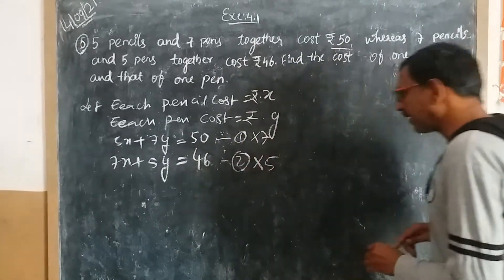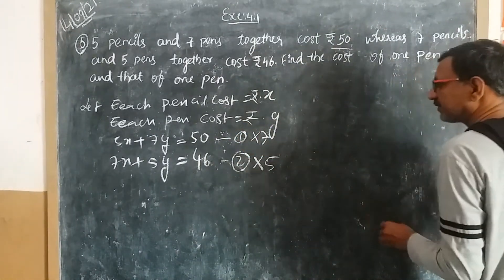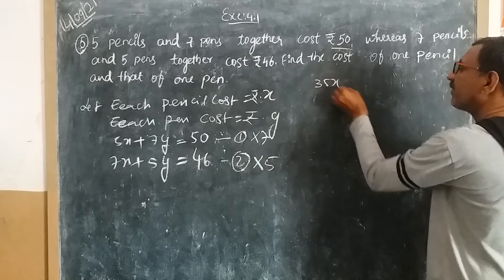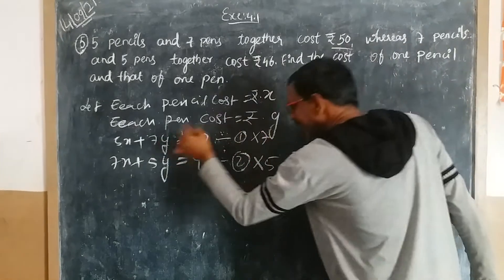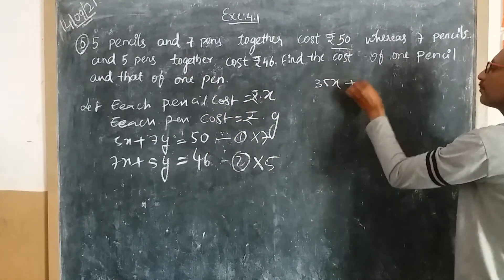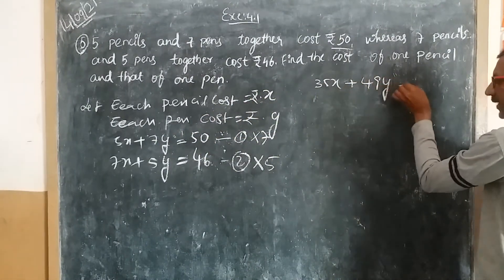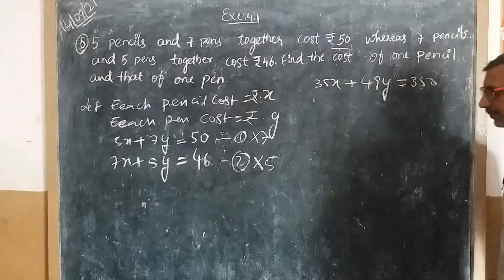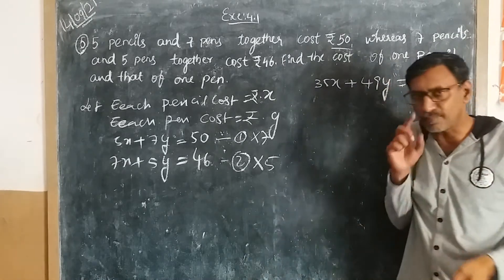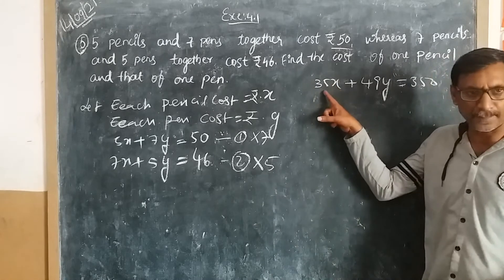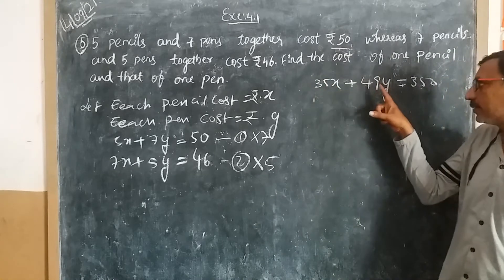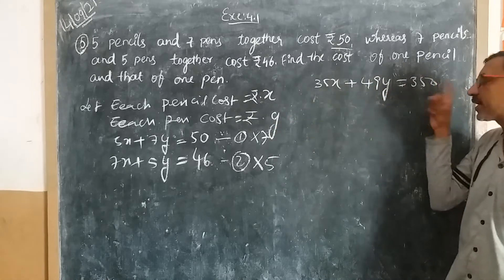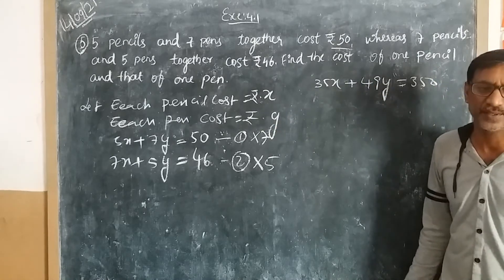By multiplying the first equation by 7: seven times 5x is 35x, seven times 7y is 49y, equals seven times 50, which is 350. So 35x + 49y = 350.